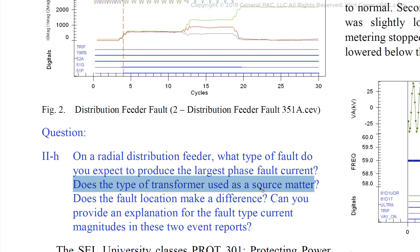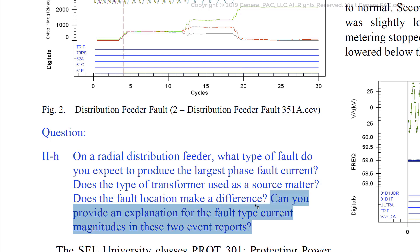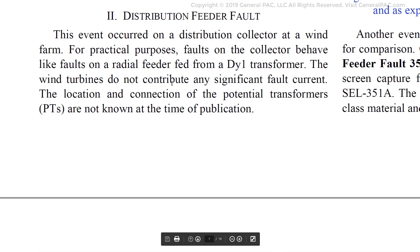The second question is: does the type of transformer used as a source matter? Yes, it does matter because depending on the type and connection of the transformer, you get different impedance quantities. The third question is: does the fault current location make a difference? Again, fault current is a function of impedance. When a fault is further away on the line, the impedance is greater, therefore the fault current is smaller. The fourth question asks for an explanation of fault type current magnitudes in the two event reports — this is very in-depth, so let's review the answer key.